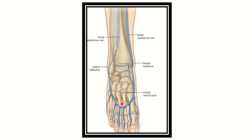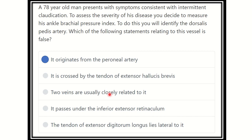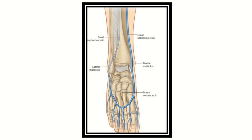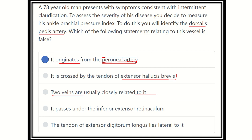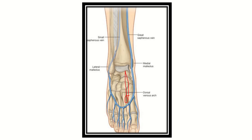Different types of veins are present around the dorsalis pedis artery. So our final answer — the statement that is NOT true regarding the dorsalis pedis artery — is that it originates from the peroneal artery. This is false because the dorsalis pedis artery arises from the anterior tibial artery, not the peroneal artery. The other options are all true: it is crossed by the tendon of extensor hallucis brevis; two veins are usually closely related to it; and it passes under the inferior extensor retinaculum.